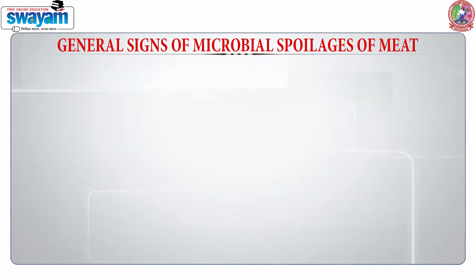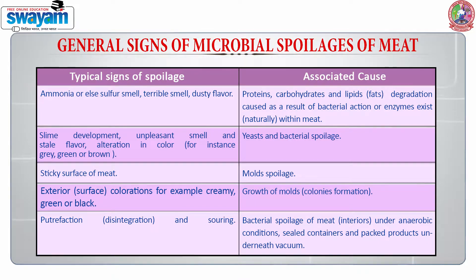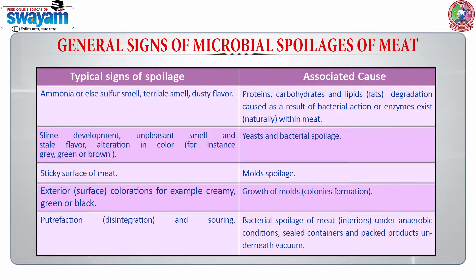There are certain indicators of microbial growth in meats so that we can understand that spoilage has taken place. A typical sign of spoilage is a sulphur smell, terrible smell or a dusty flavor. This is due to the breakdown of proteins, carbohydrates and lipids by the action of bacteria and enzymes which are naturally within the meat. We can also see slime development and there is an unpleasant smell and a stale flavor. There is a change in color, which can be associated with gray, green or brown, and this is due to the growth of yeast and some bacterial species.